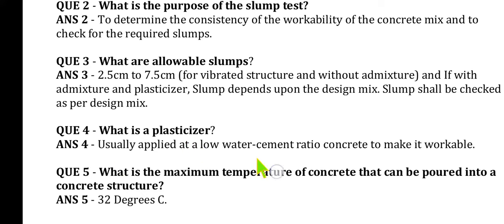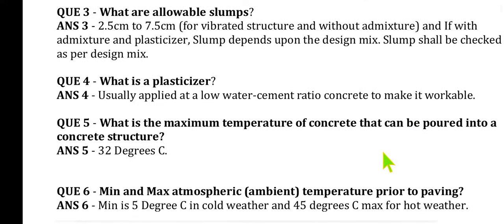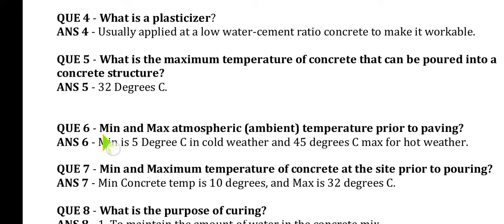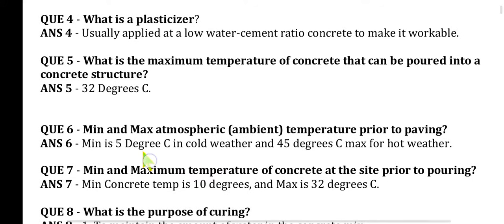Question 5: What is the maximum temperature for concrete that can be poured into a concrete structure? The maximum temperature is 32 degrees centigrade. Question 6: What are the minimum and maximum atmospheric ambient temperatures prior to paving? Minimum temperature is 5 degrees centigrade in cold weather, and maximum is 45 degrees centigrade in hot weather. If the temperature is below 5 degrees, you will add admixtures.